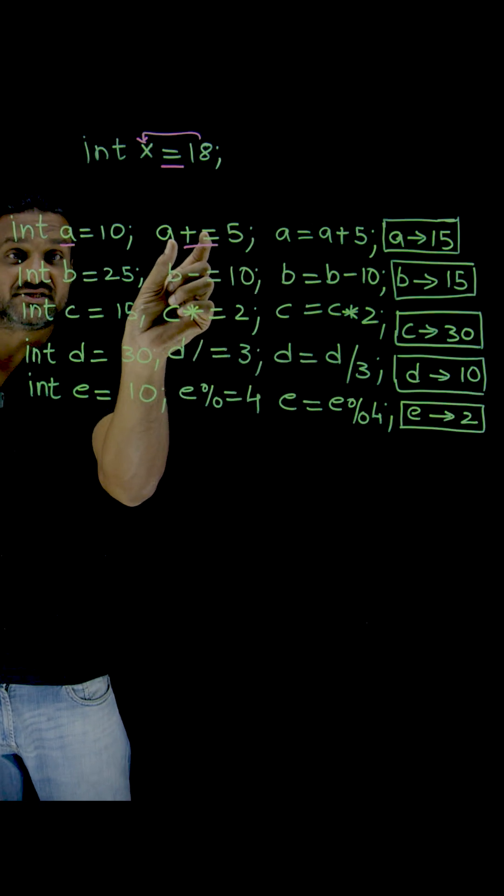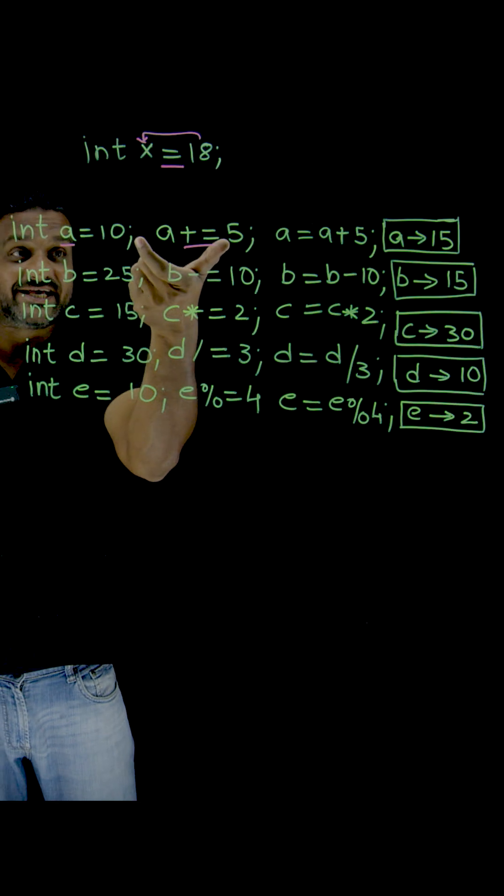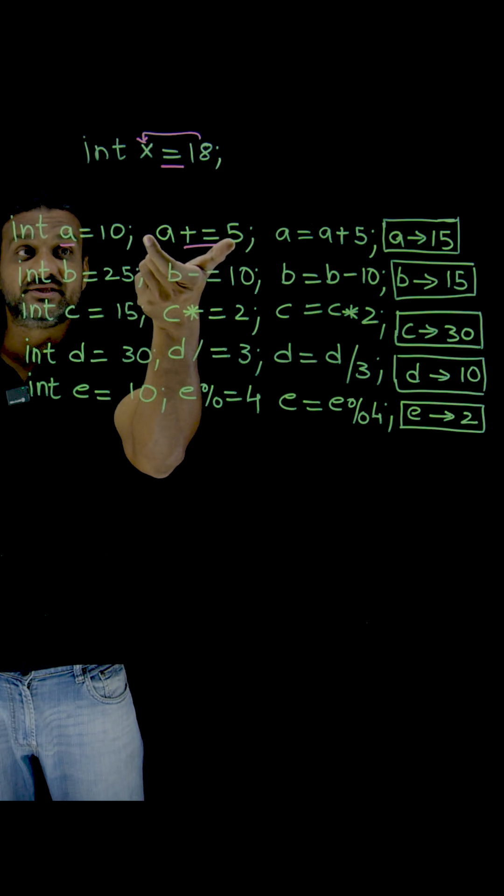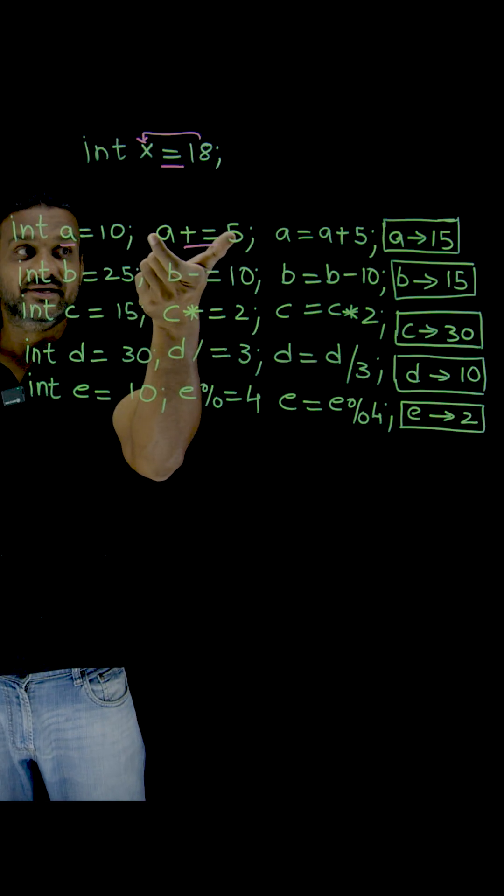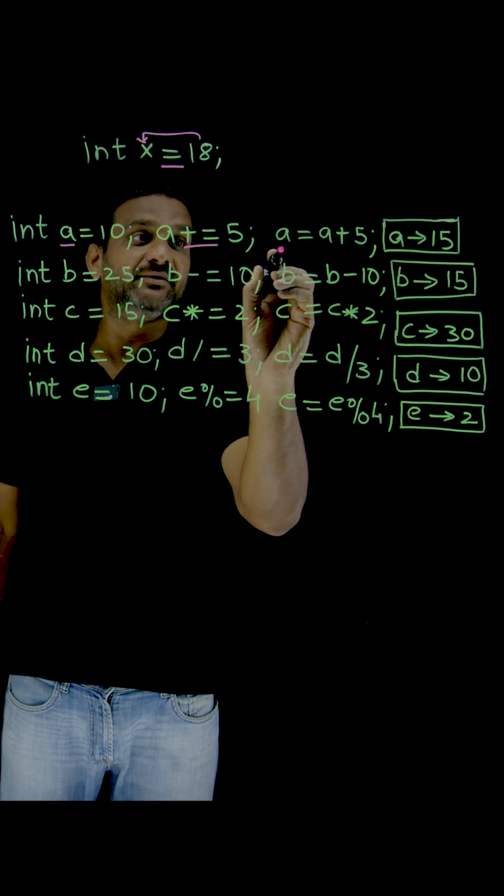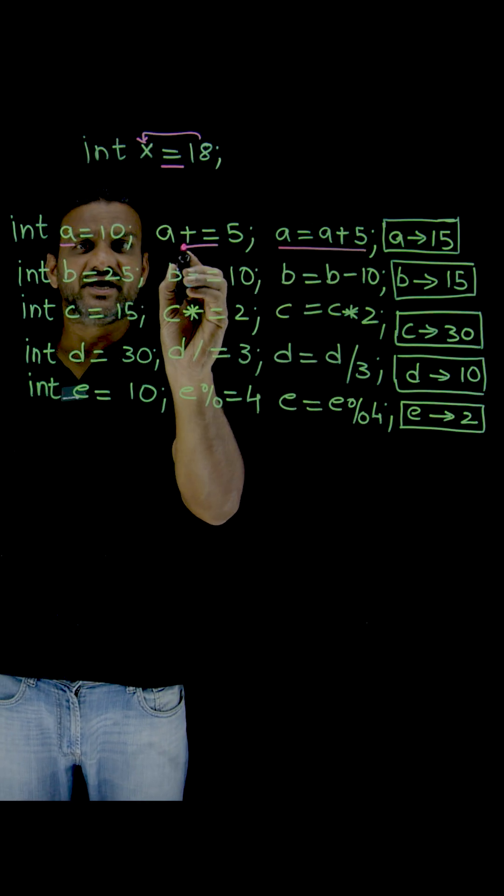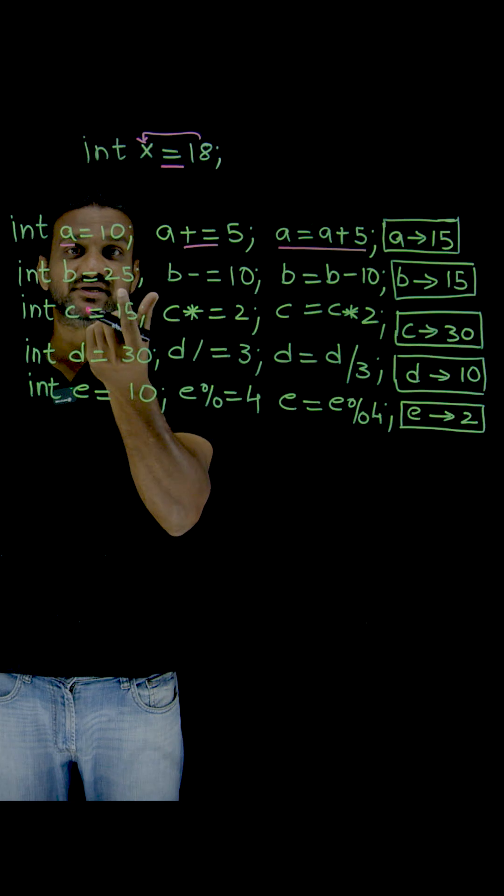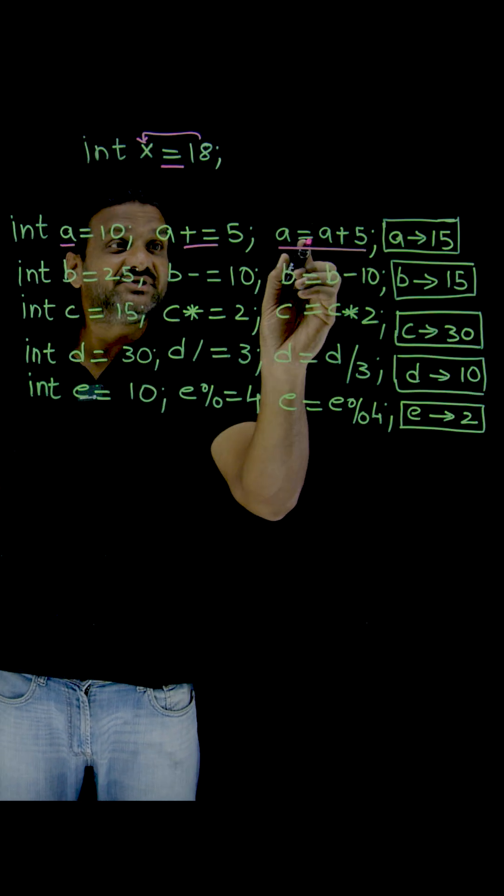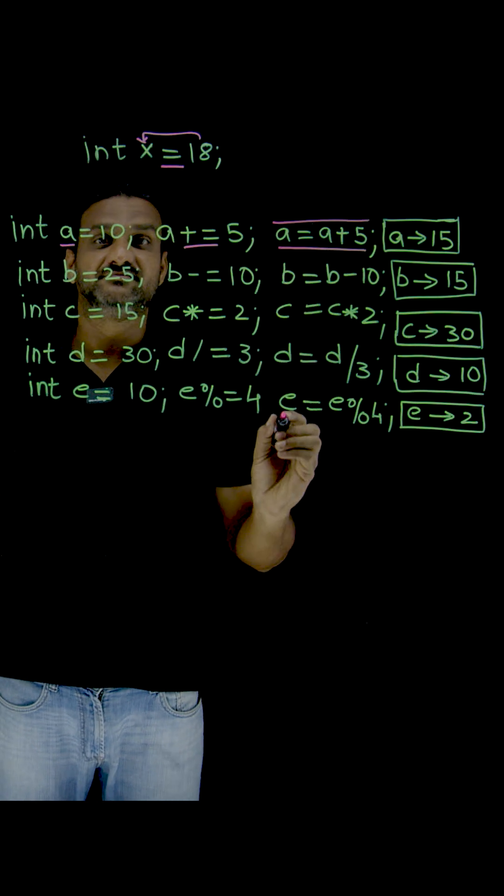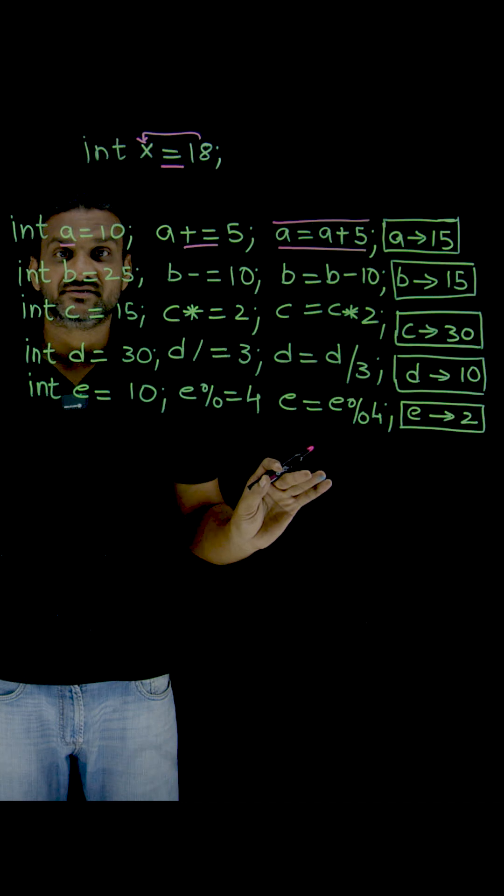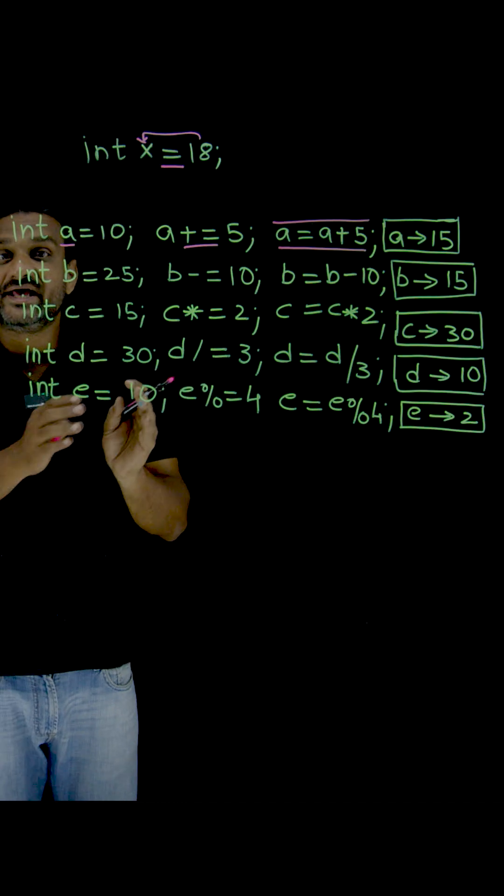This is the shorthand method to do that operation. The expansion of this statement is a = a + 5. You can use this also. This is just a programming shorthand method to describe this complete expression. If you want to add a value...